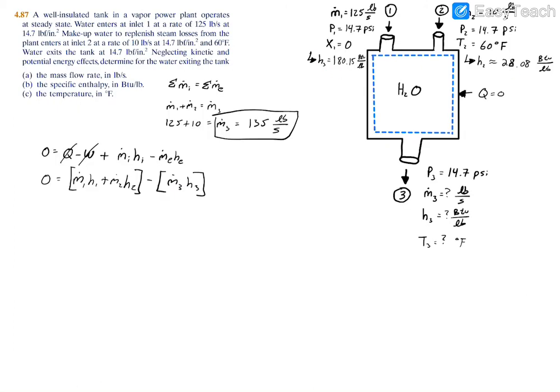With these two values, we have everything we need to solve for H3. We have 0 equals 125 times 180.15 plus 10 times 28.08. These are the mass flow rates times the specific enthalpies at the inlets. From that, we're going to subtract 135 multiplied by the unknown H3.